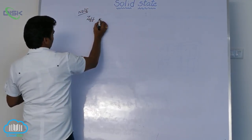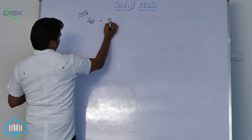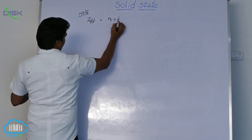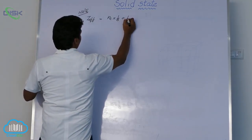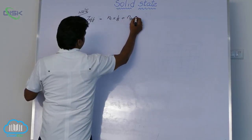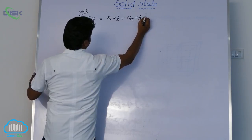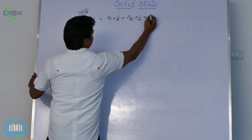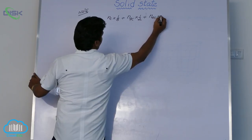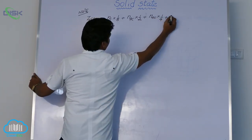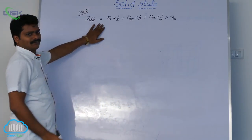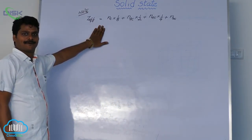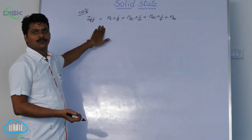How to calculate Nc: number of corner atoms into 1 by 8 plus number of face center atoms into 1 by 2 plus number of edge center atoms into 1 by 4 plus number of body centered atoms. This is the formula we use for any unit cell of cubic system.